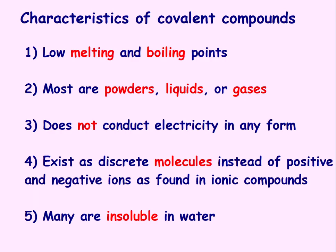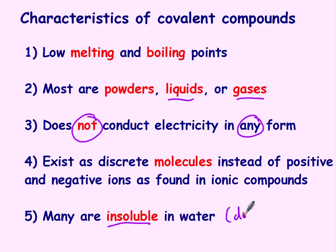Covalent compounds have low melting and boiling points, so they're usually going to be liquids or gases at room temperature, and the ones that are solids are usually powdery. They do not conduct electricity in any form. They exist as discrete molecules instead of positive and negative ions, and many are insoluble in water, though some covalent compounds do dissolve.